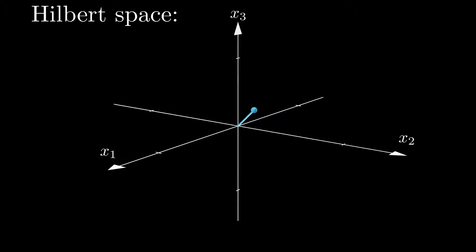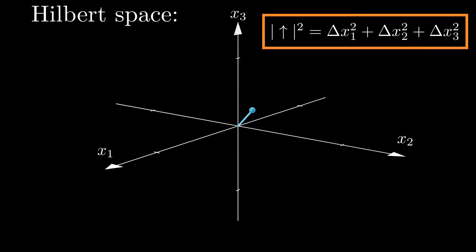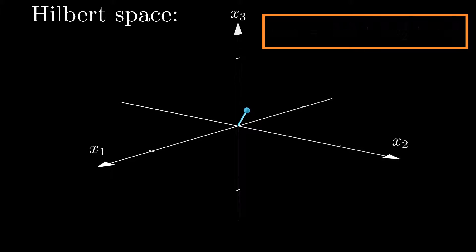From the Pythagorean theorem, we know that the sum of the squares of all vector components must then be equal to one, so the normalization constraint only applies to squared wave functions, which is the result of the Born rule, a key postulate at the heart of quantum mechanics.